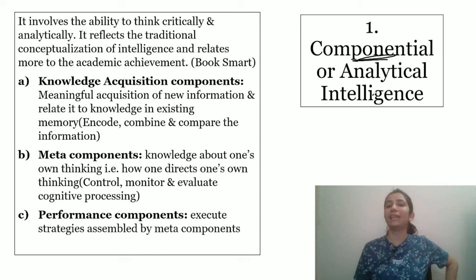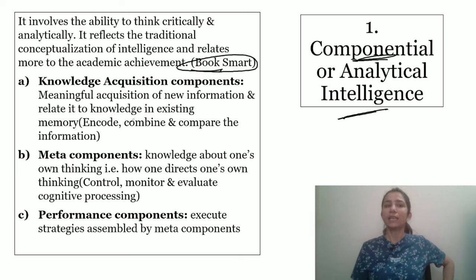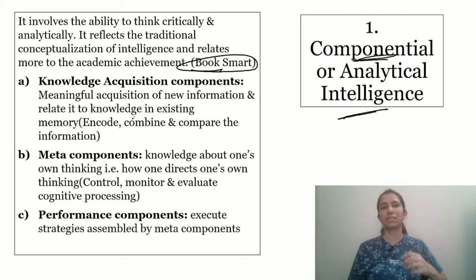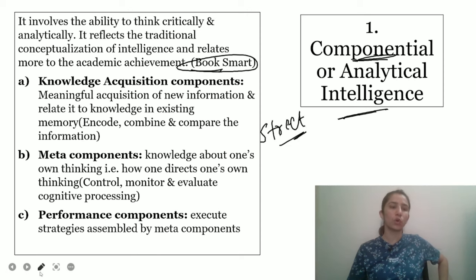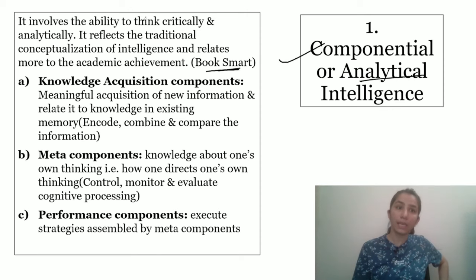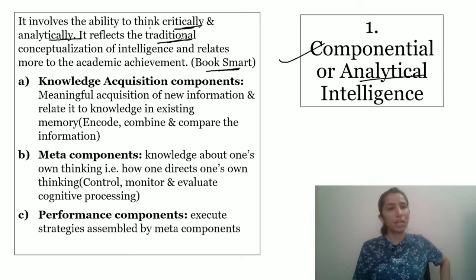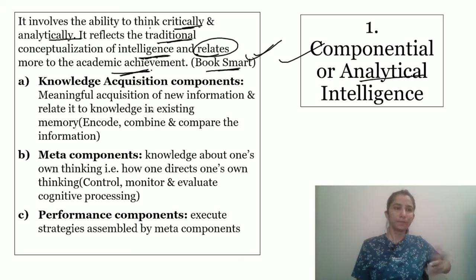First: Componential or Analytical Intelligence. You can remember it from 'book smart' — you want to achieve something, analyze or relate, so you focus more on reading or books. Like 'street smart' is where common sense is more, this one is 'book smart.' Componential or Analytical Intelligence is the ability to think critically and analytically. It reflects the traditional conceptualization of intelligence and we connect it with academic achievements.